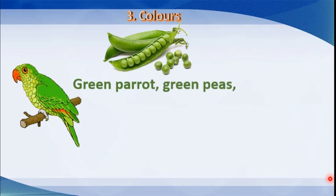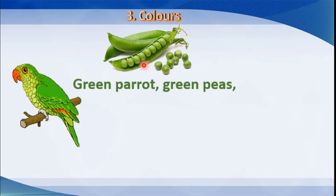We will move to the first stanza. Green parrot, green peas. This is green color. See this parrot - it is a bird, tota, and it is green in color. Green peas - matar, your mom brings from the market and makes vegetables from peas. They are green in color.